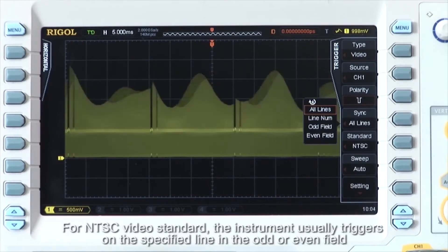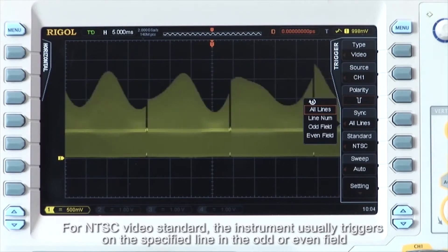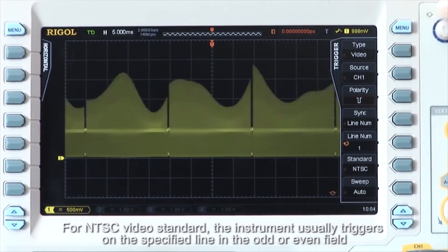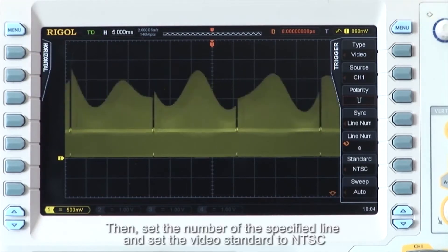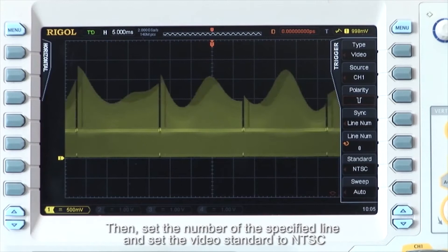For the NTSC video standard, the instrument usually triggers on the specified line in or the odd or even field, so here line num is selected. Then set the number of the specified line and set the video standard to NTSC.